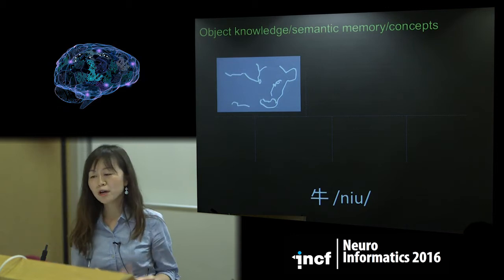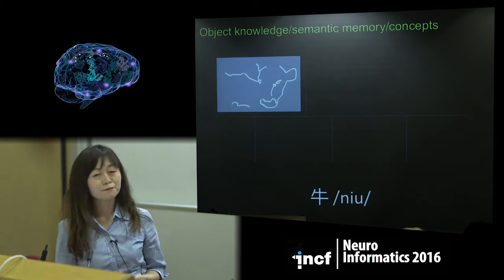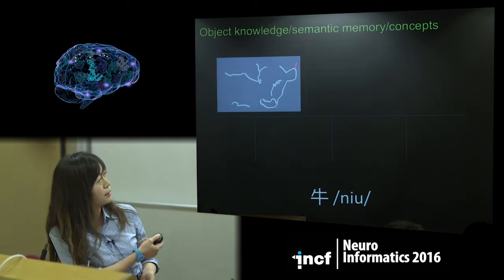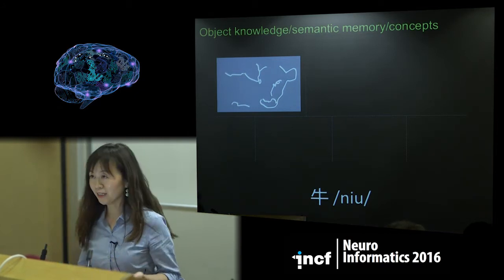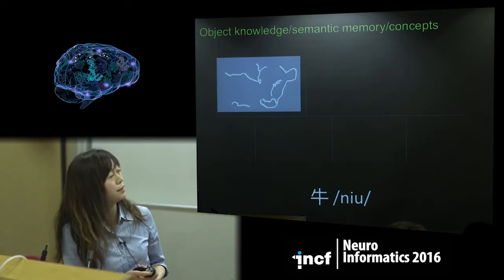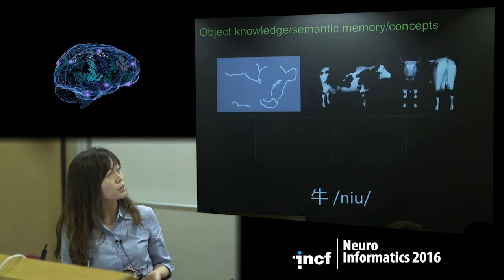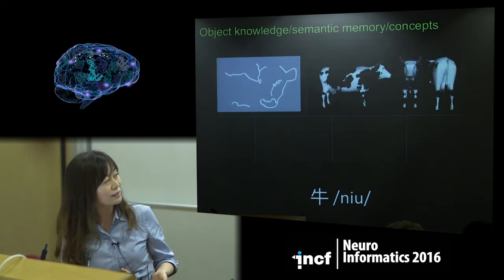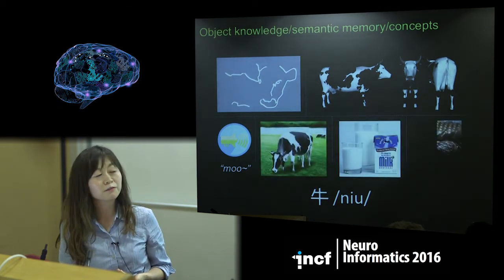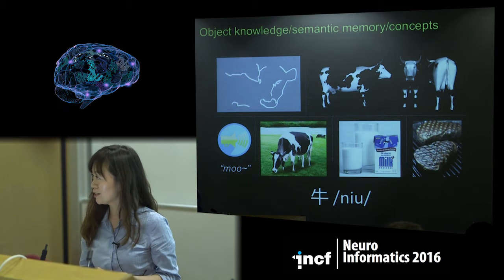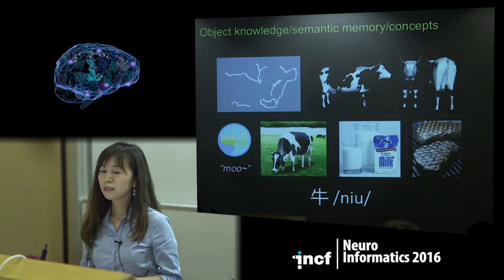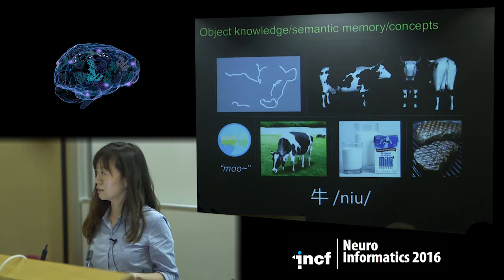So what do I mean by object concepts? I take it from a very simple definition. Suppose we see a very simple stimulus. There are many things we know about it that are not contained in the external stimulus — like what it looks like from the back, what sounds it produces, where it can be found, something very abstract about its function to us as humans, and of course the words associated with it. All this knowledge is represented in the brain.